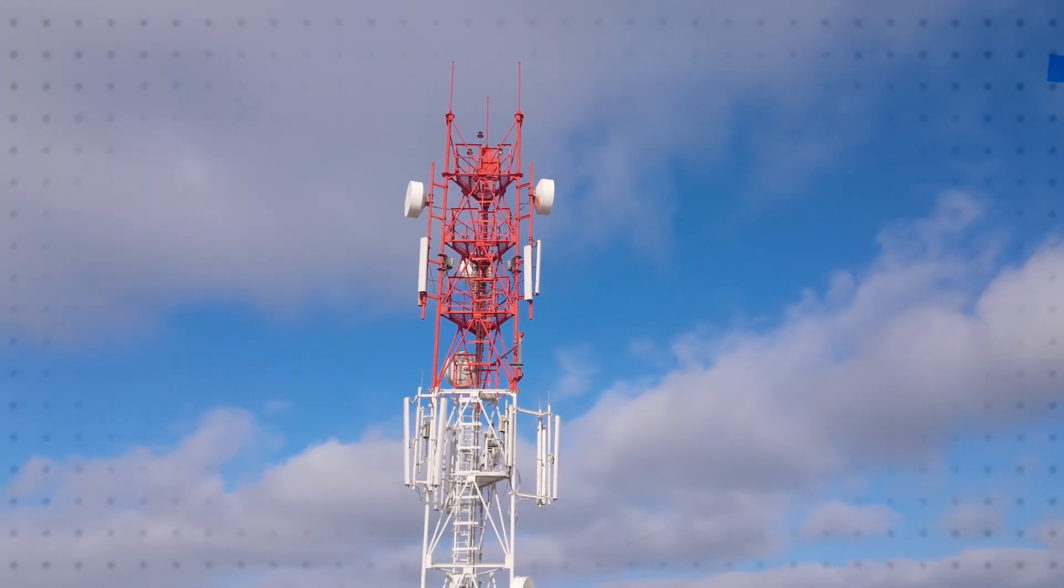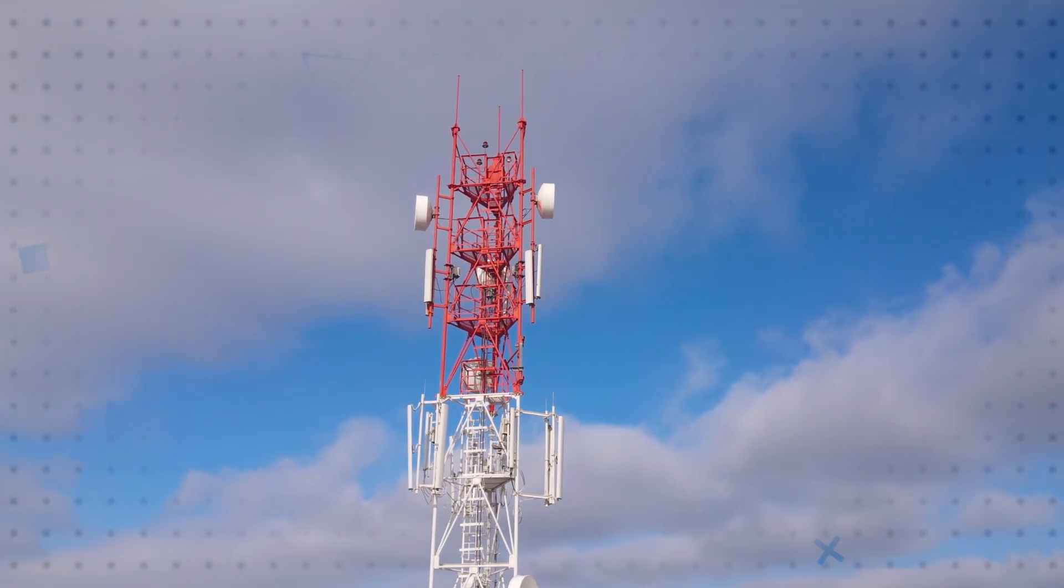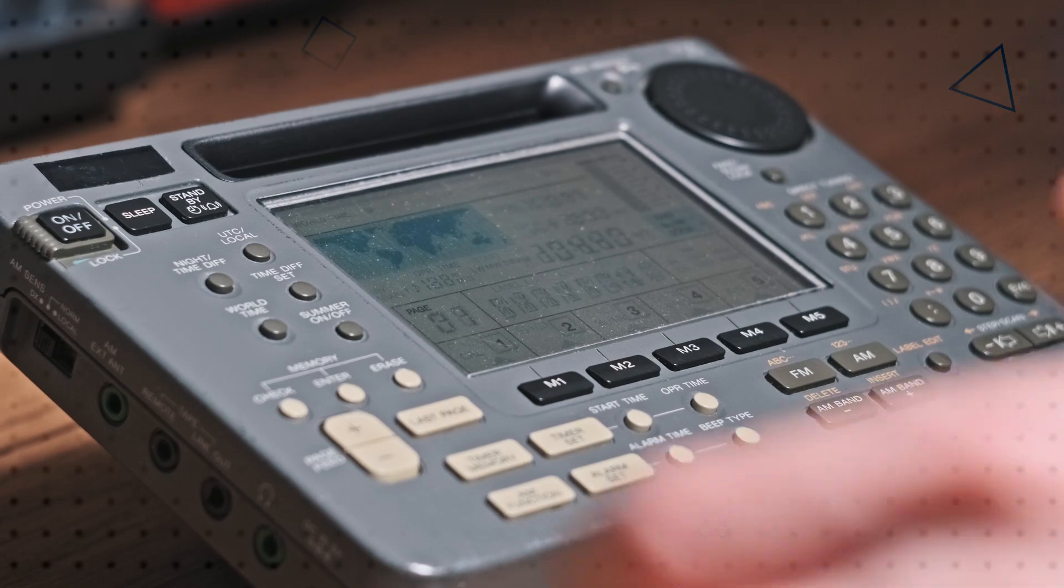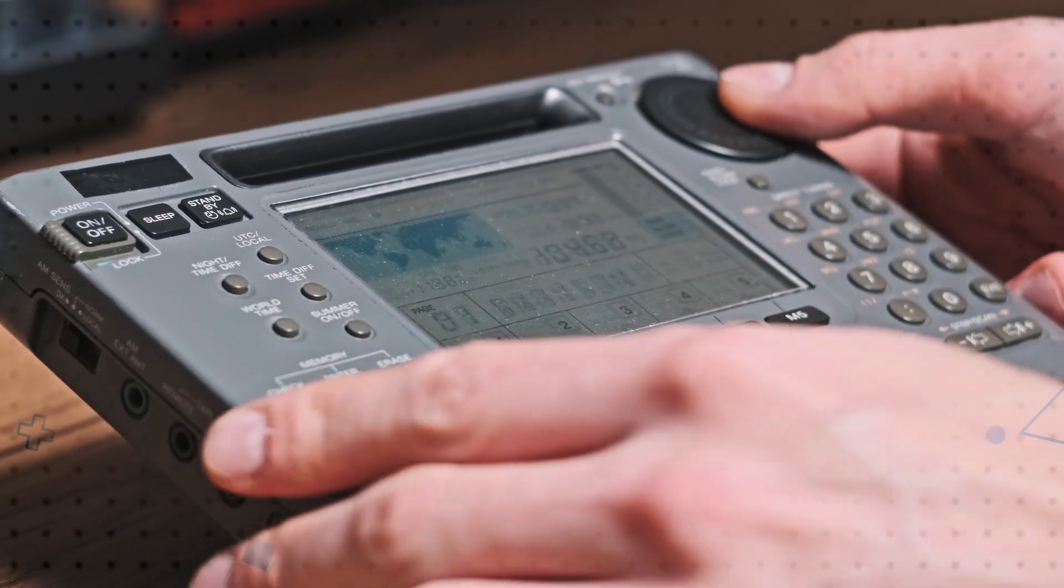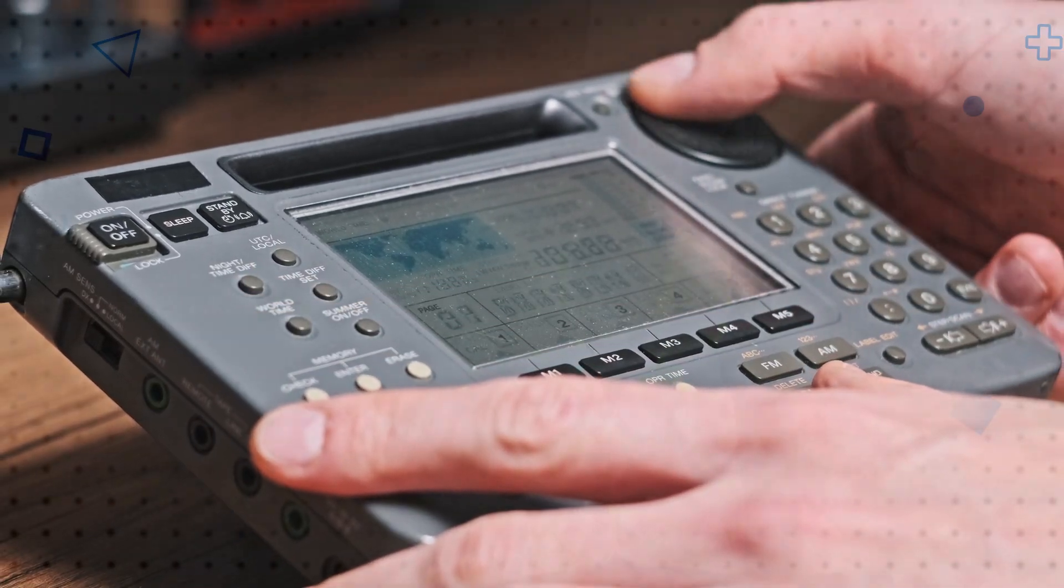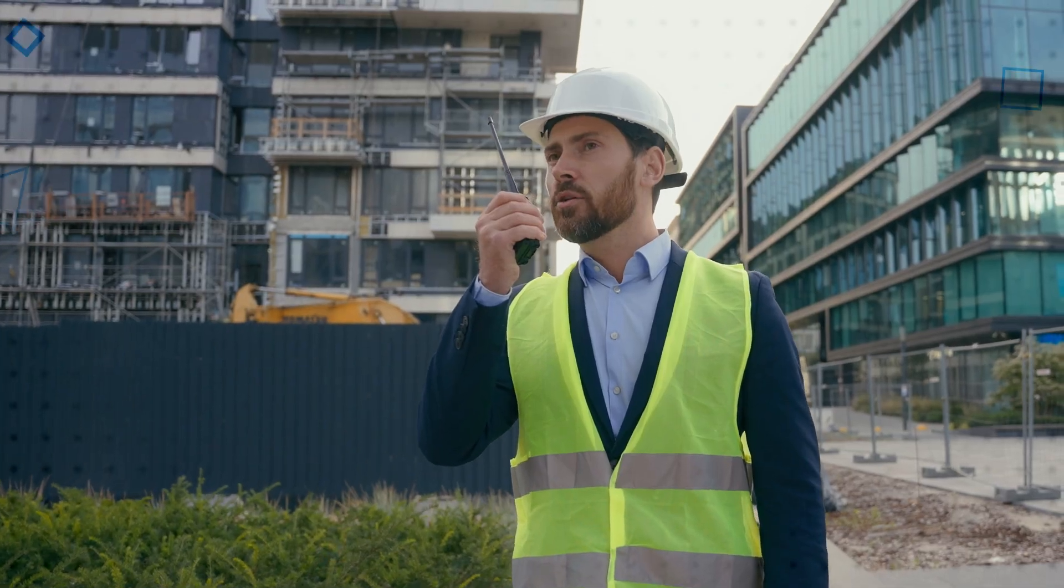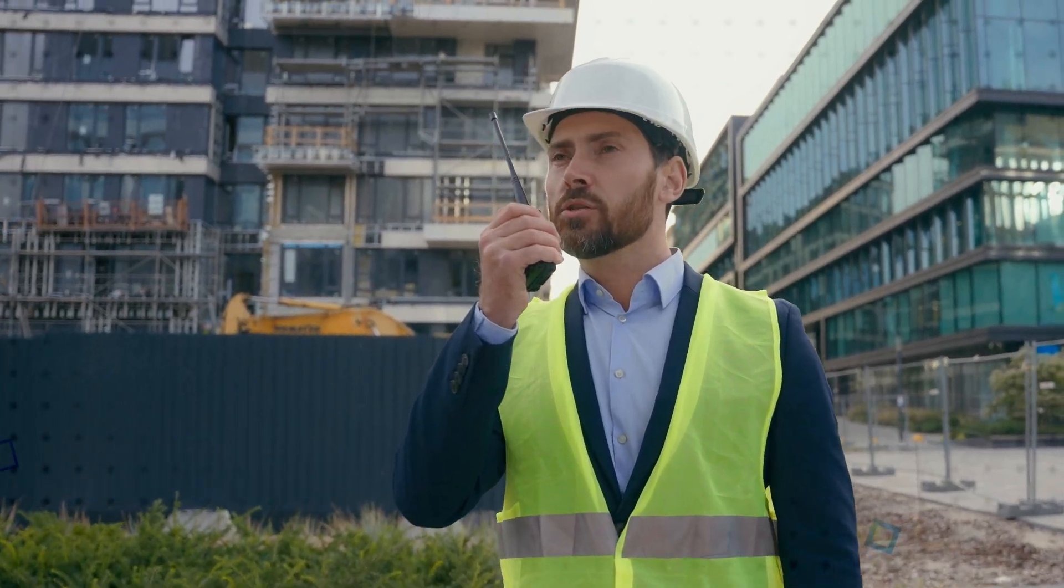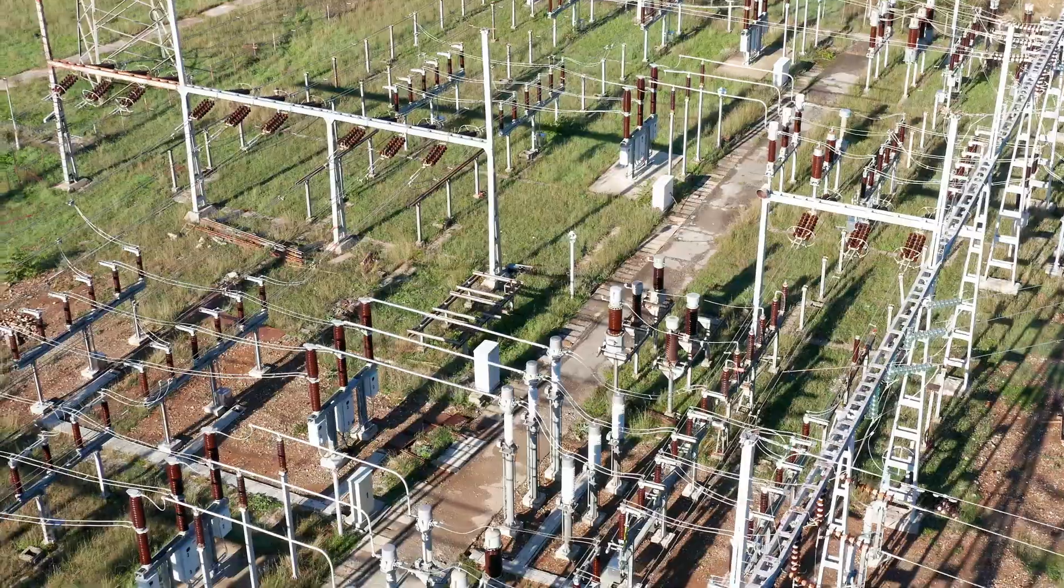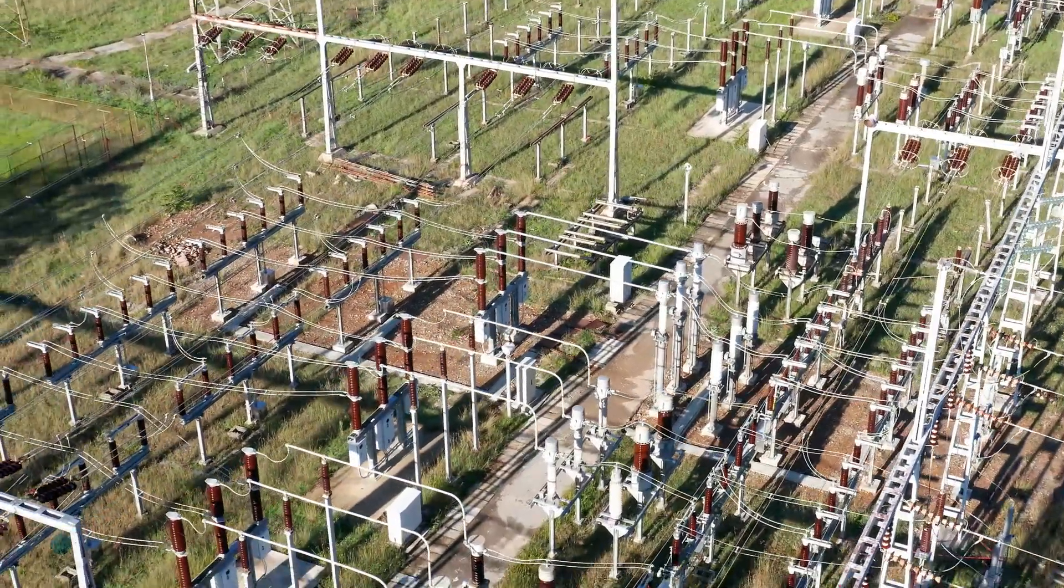The Bourns' PTVS-1 family of 1kA surface mount PTVS diodes are designed to meet IEC 61000-4-5 8x20 microsecond surge requirements and are ideal for exposed PoE ports, small cells for cellular networks, remote radio units, baseband units, and high power DC bus protection.